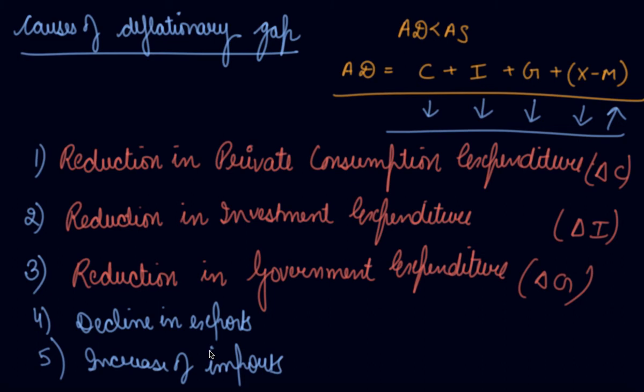The sixth we have is increase in taxes. See if the taxes are increased, which means you have to give more from your income in the tax. So if you do not have money, how will you demand? Because major part you are giving as a tax. So in this way these are the various factors that cause the deflationary gap in the economy, due to which the aggregate demand reduces.